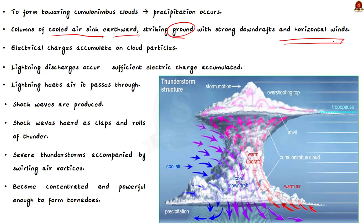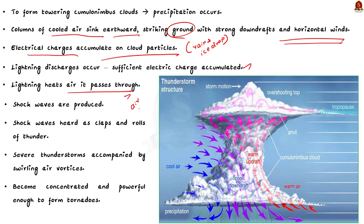Why is a thunderstorm always associated with lightning and thunder? When a thunderstorm occurs, electrical charges accumulate on cloud particles — water droplets and ice present in the cloud. Once the electric charge is sufficient, lightning discharge occurs. When lightning occurs, it heats up the air it passes through. When air gets heated, it expands. When air expands suddenly due to lightning, shock waves are created. These shock waves are heard as claps and rolls of thunder. This is why thunderstorms are always associated with lightning and thunder.